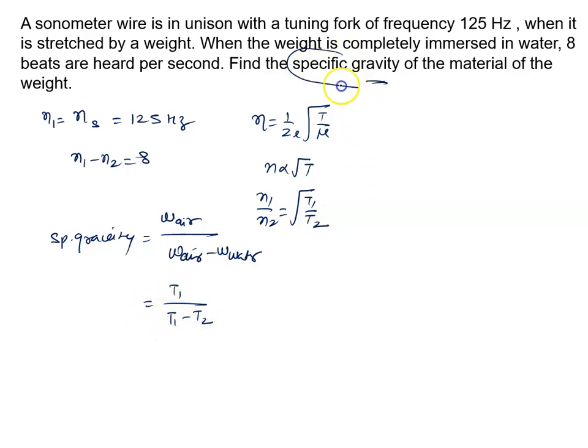And we have to calculate specific gravity, let's say specific gravity is sigma. So here we write sigma T1 minus sigma T2 equals T1. It means T1 by T2 is nothing but sigma upon sigma minus 1.